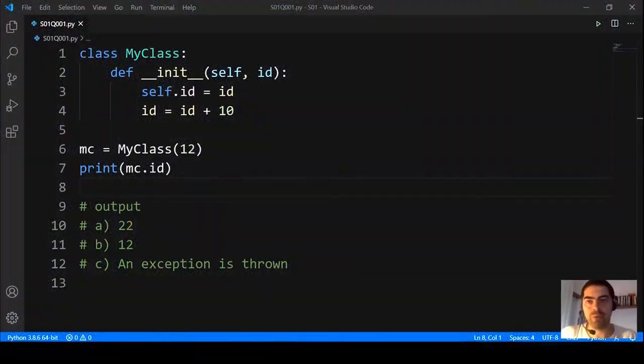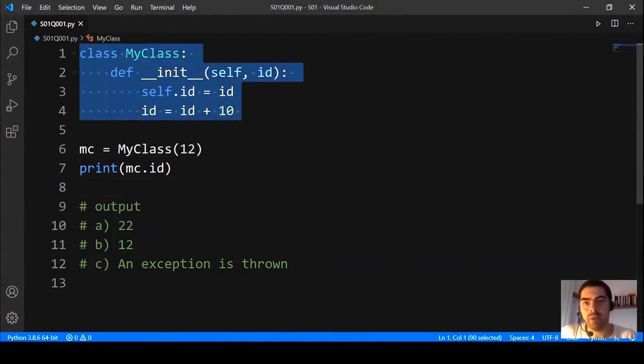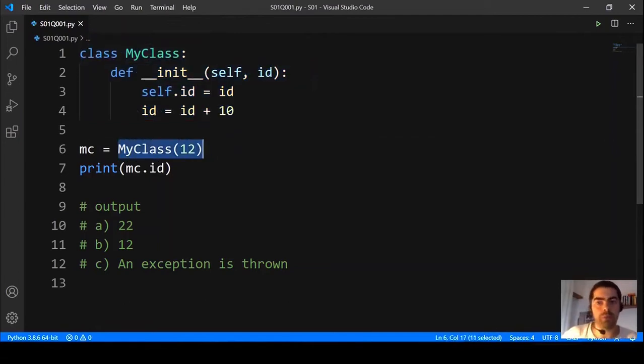So, this is the code for the first question and we have here a class, MyClass, and then we create an object of that class providing the value 12 and we print the ID, the property ID of that object in the end.